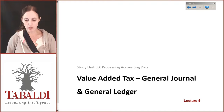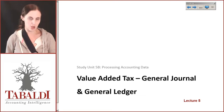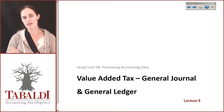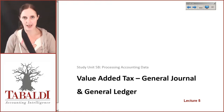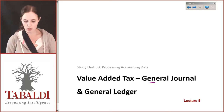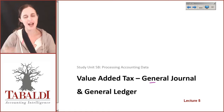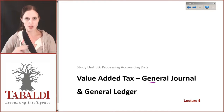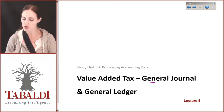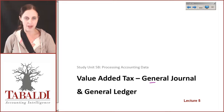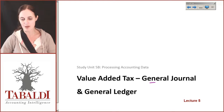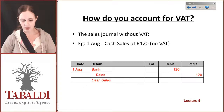The next thing we need to do is consider how we actually treat this in the general journal and general ledger. Right at the beginning of study unit 5, I said that any of your transactions could use the general journal to be brought into the books. We don't have to have a CRJ or a CPJ — we could use a general journal. So every single transaction could be brought into your books using a general journal. That's how I'm going to start showing you how we treat VAT and how it looks in the general ledger.